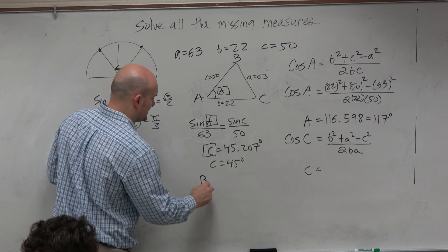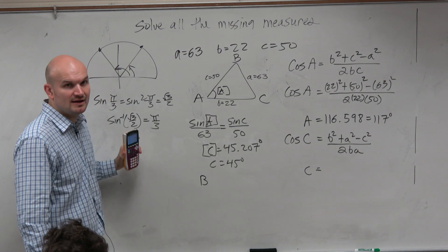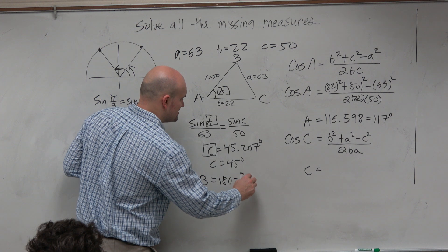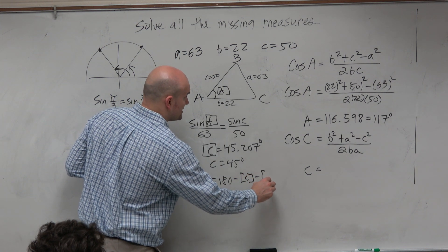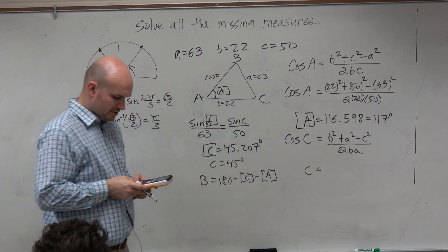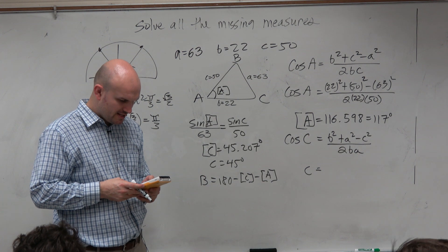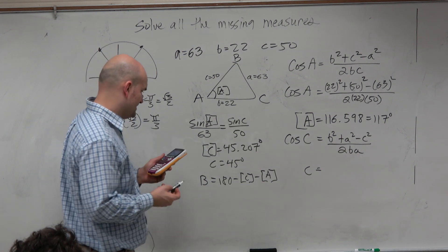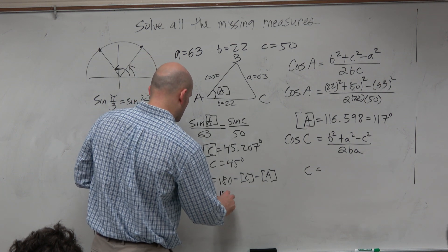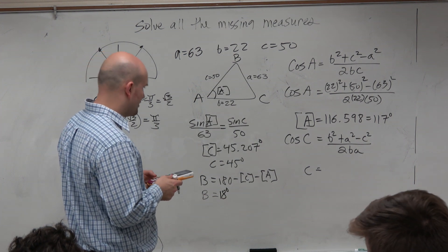So I do store alpha C. And then, if I want to figure out B, what do I do? I just figured out C. I just figured out A. You subtract it from 180. Just 180 minus my stored answer C, minus my stored answer A. So then I just do 180 minus alpha C minus alpha A. And I get 18 degrees. And should A plus B plus C all add up to 180? Yes. So therefore, you could always check your work with that.